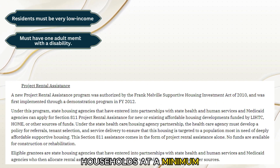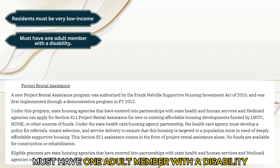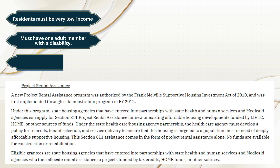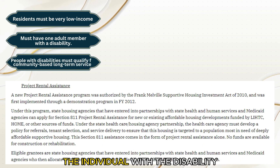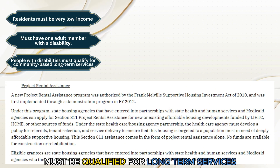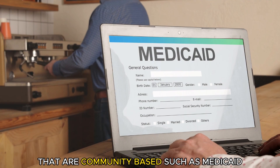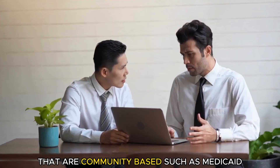Households, at a minimum, must have one adult member with a disability. The individual with a disability must be qualified for long-term services that are community-based, such as Medicaid.